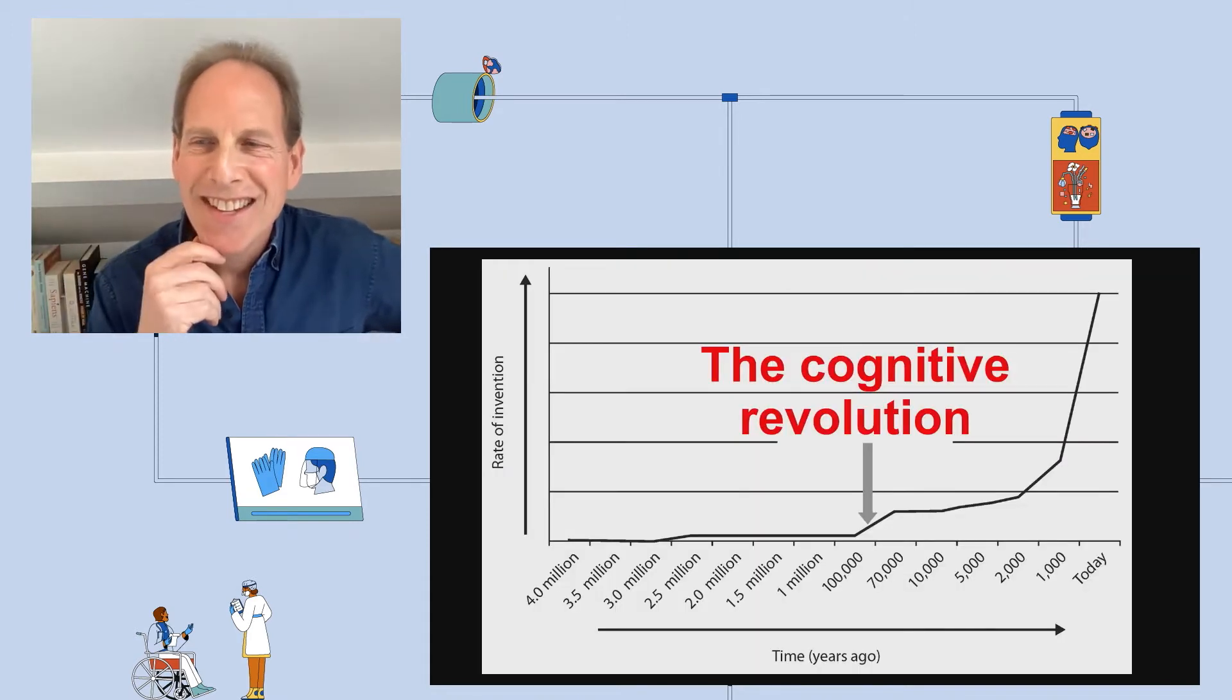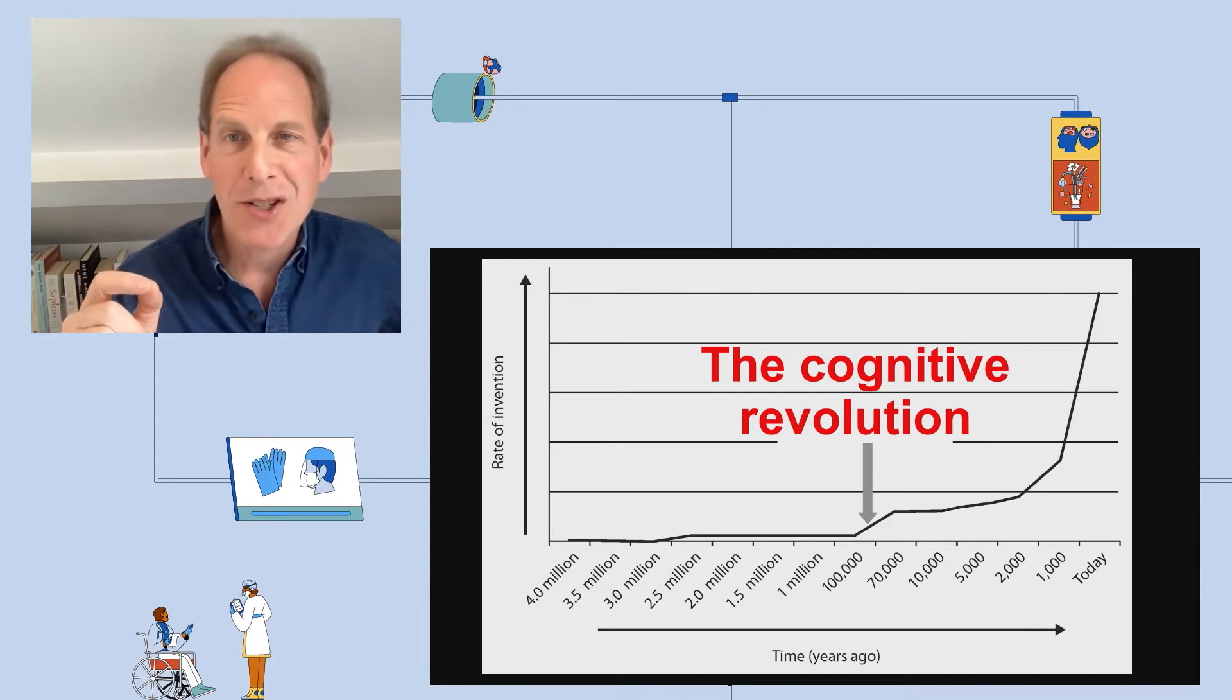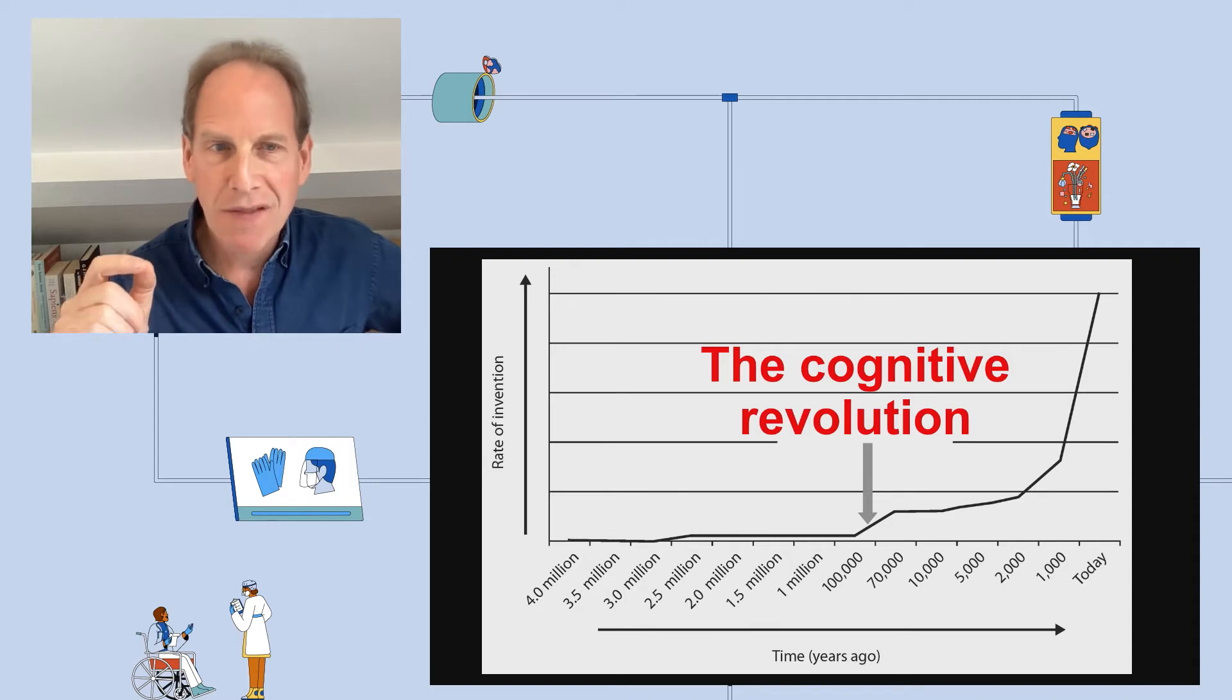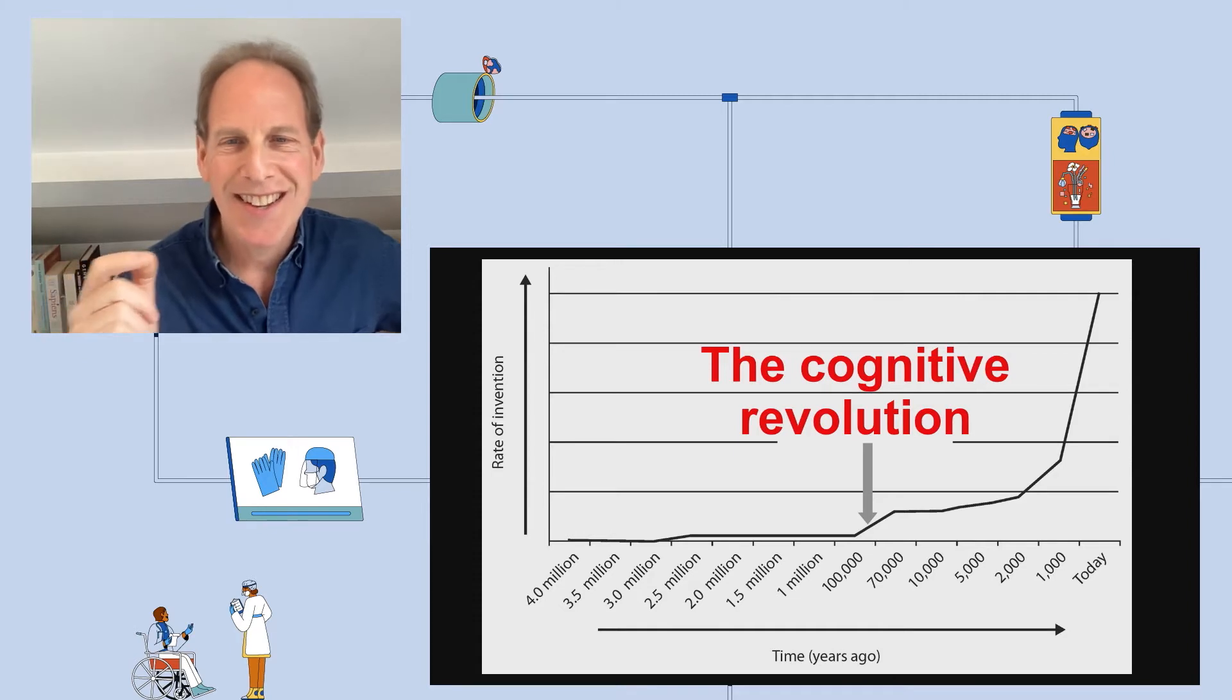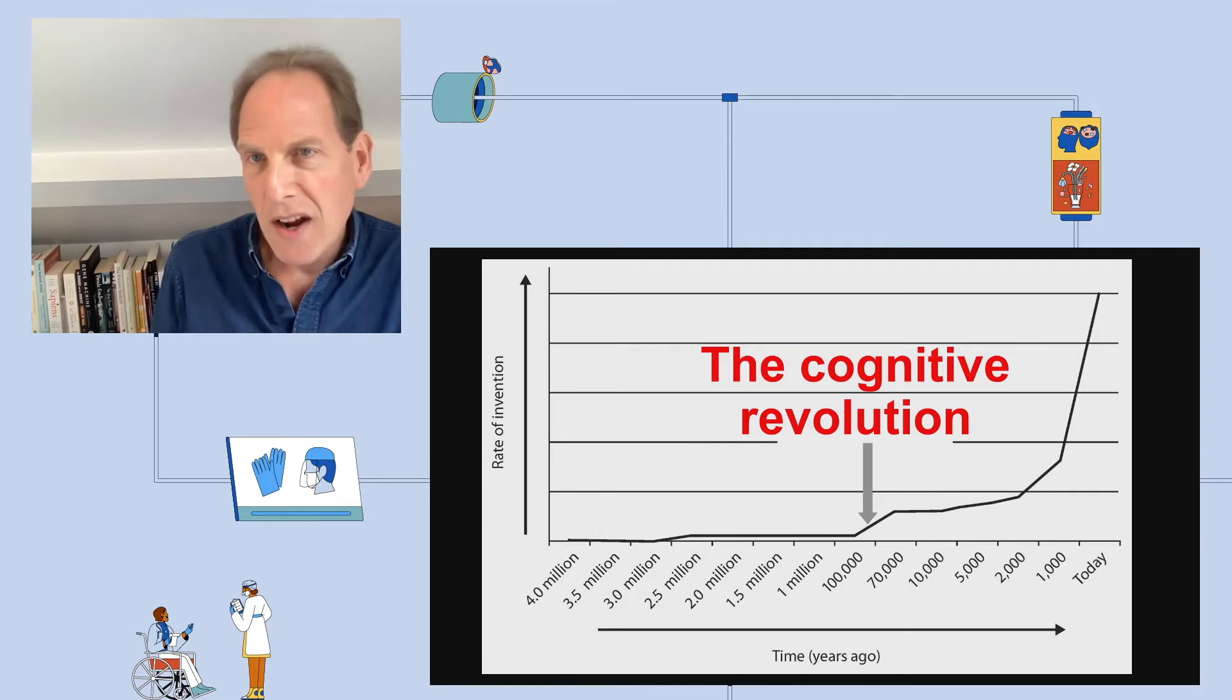But then, 70 to 100,000 years ago, when Homo sapiens was on the scene, the rate of invention suddenly took off and it's been unstoppable ever since. Suddenly we see the capacity for generative invention, so not just inventing once but generating non-stop. So I argue that a cognitive revolution had occurred in the human brain.